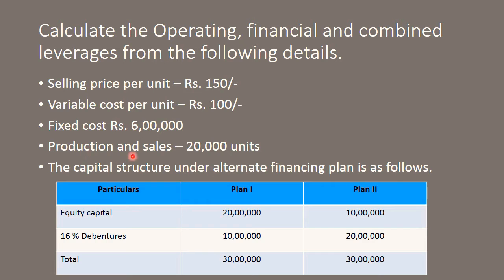20,000 units are produced and 20,000 units are also sold — whatever is produced, everything is sold. In some problems, production might be 1 lakh but actual sales are 80% or 90%, but here there is no difference between production and sales. The capital structure under the alternate financing plan is as follows.